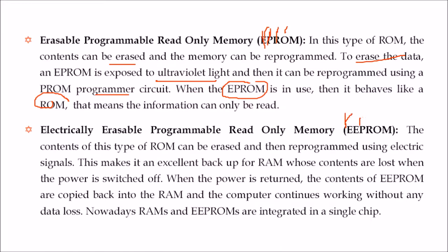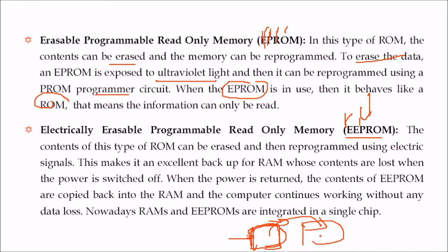Then there is EEPROM — the contents can be erased and reprogrammed using electric signals. An important use case: if important data is in RAM and power goes off, RAM loses everything. With EEPROM, you can store what was in RAM, and when the computer restarts it transfers the EEPROM data back to RAM, restoring the original situation. This is exactly what happens when you hibernate or sleep your computer. Nowadays RAMs and EEPROMs are integrated in a single chip.